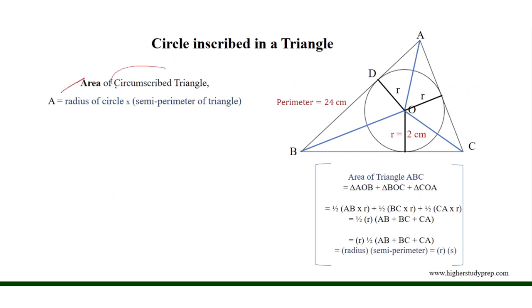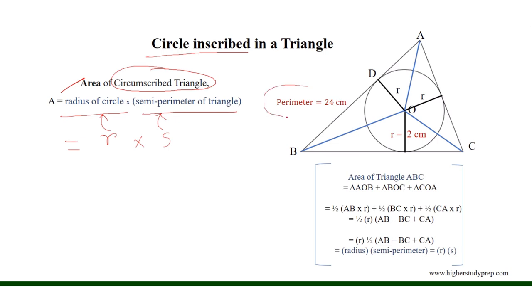The area of the circumscribed triangle with respect to the inscribed circle is equal to the radius of the circle multiplied by the semi-perimeter of the triangle. So the area equals R times S, where R is the radius of the circle and S is the semi-perimeter of the triangle. Here, it is given that the perimeter equals 24 cm for circumscribed triangle ABC, and the radius of the inscribed circle is equal to 2 cm.